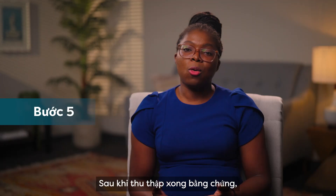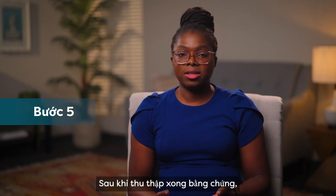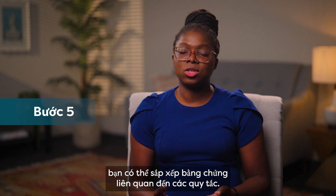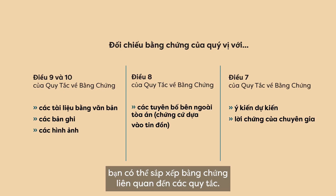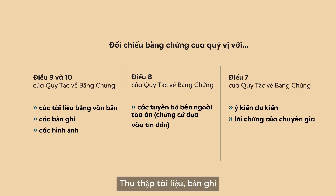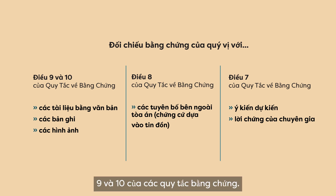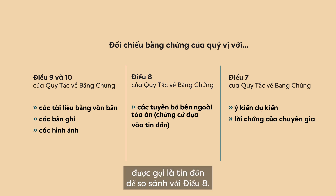Step 5: Once you're done gathering your evidence, you can organize it as it relates to the rules. Gather written documents, recordings, and photographs to compare with Articles 9 and 10 of the rules of evidence. Gather your out-of-court statements, also known as hearsay, to compare with Article 8.